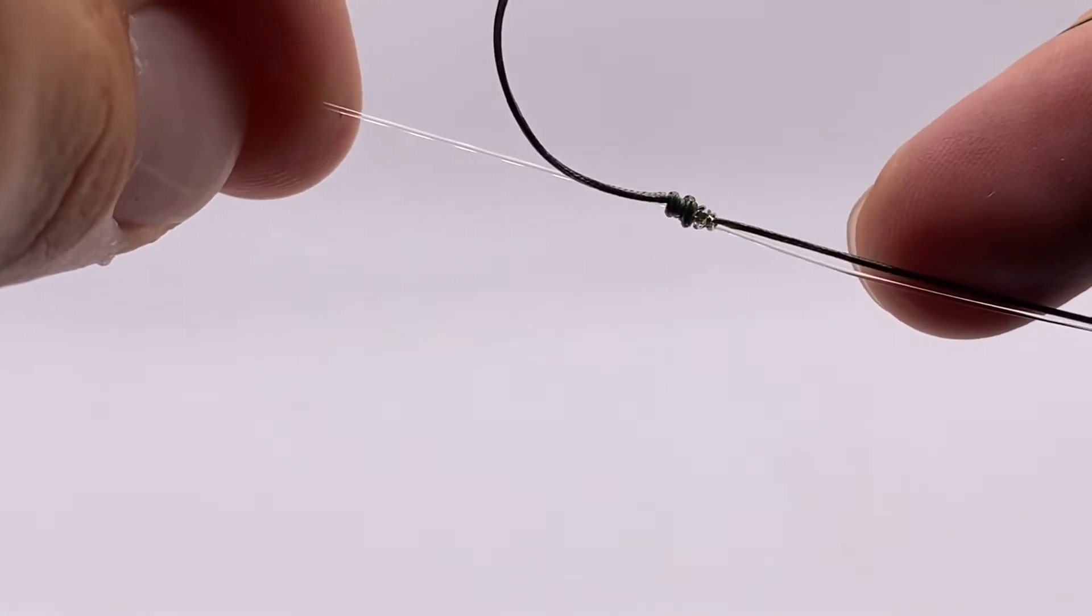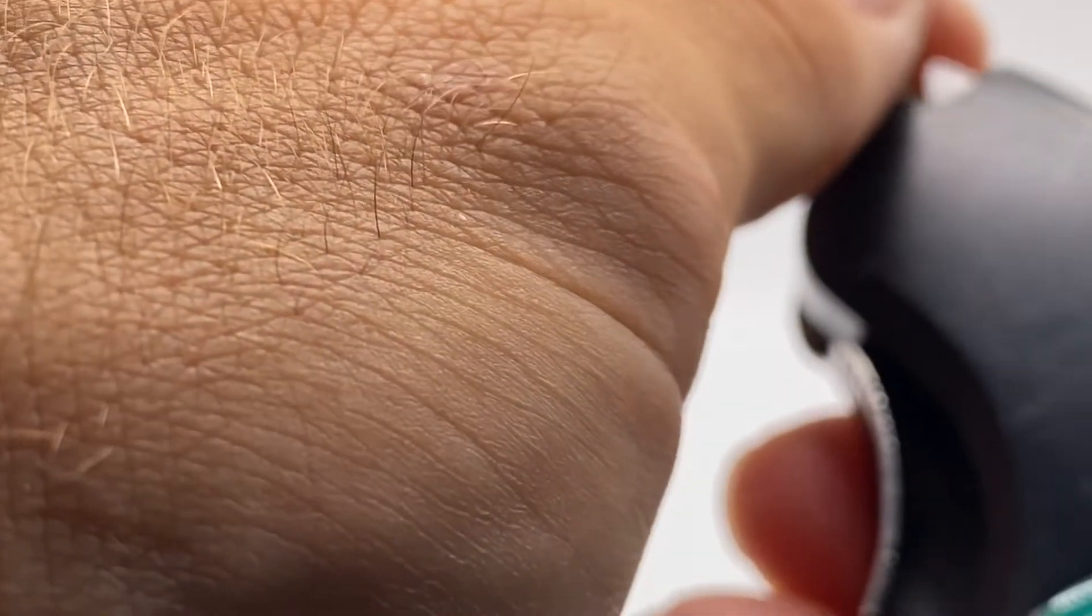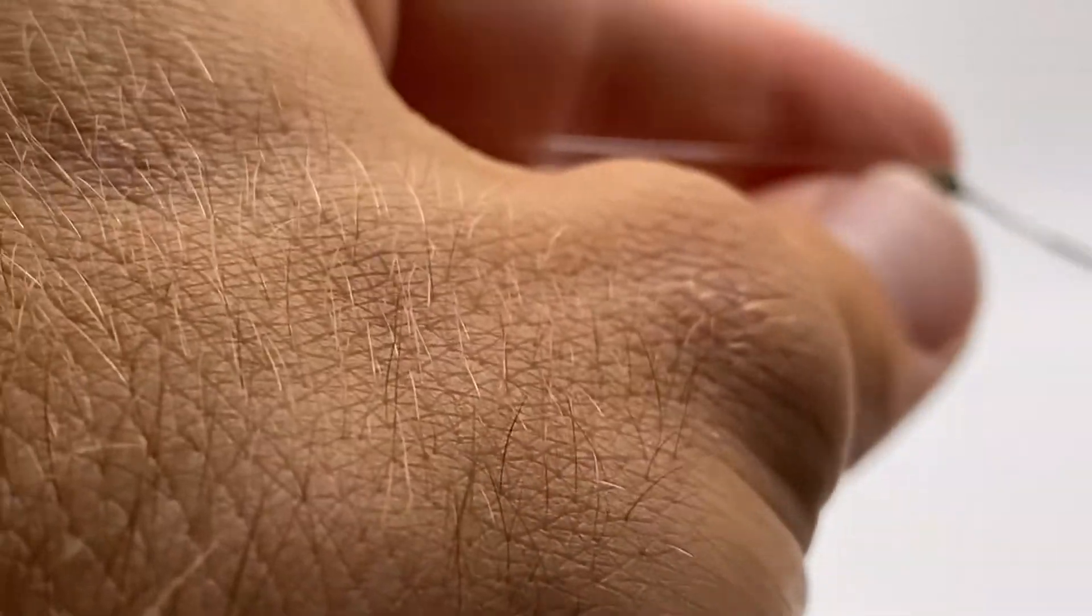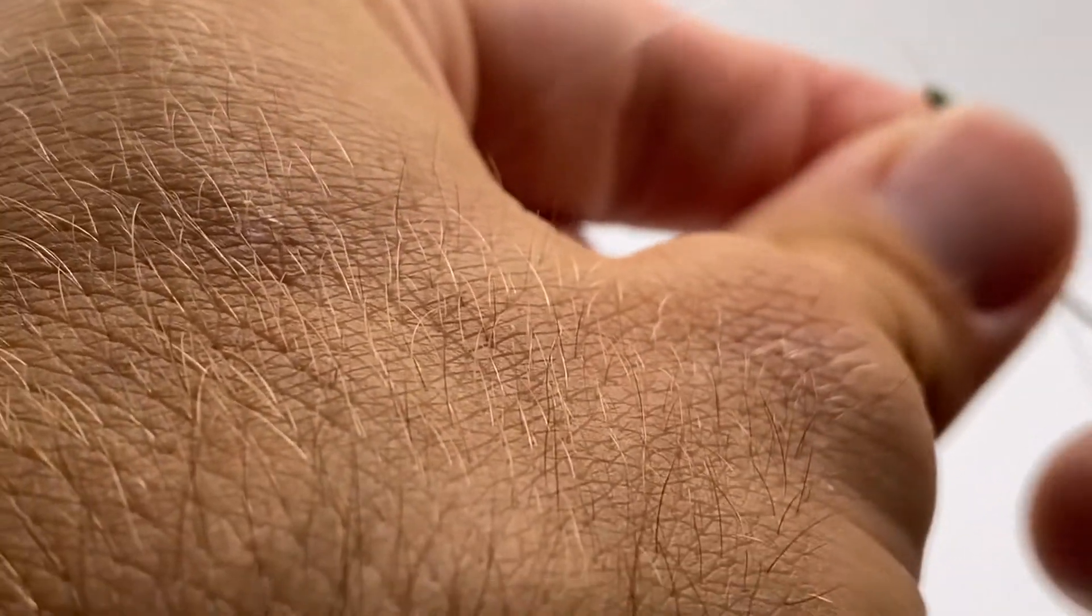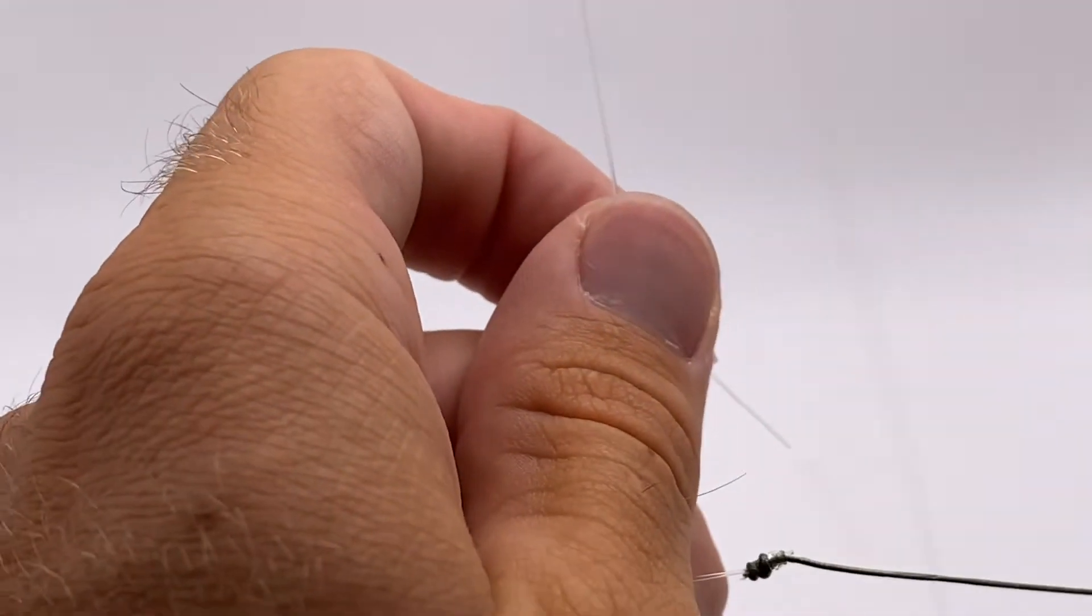Now all you need to do is just trim the tag ends. Just like so. Let's get the braid done. Now we just get the fluorocarbon. Boom.